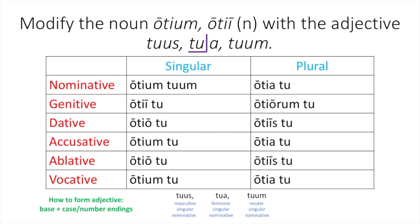Now that you have your base, you add your case and number endings. Because otum, ote is neuter, and totus, tota, totum is a first and second declension adjective, you use the second declension neuter case and number endings. In the genitive: ote, totoe. In the dative: oto, tuto. In the accusative: ote, totum. In the vocative: ote, tuto. In the nominative plural: ote, tuto. Oteorum tuorum in the genitive plural. Oteis tuis in the dative plural. Otea tua in the accusative plural. Oteis tuis in the ablative plural. And otea tua in the vocative plural.